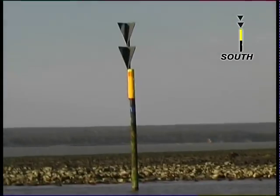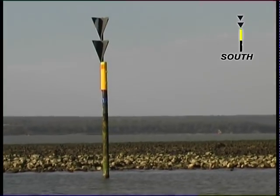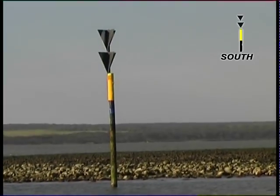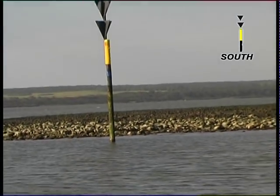As you might expect, the south mark is opposite to the north one. The safe water is south of the mark. The two black cones point down. The yellow band is above the black one.